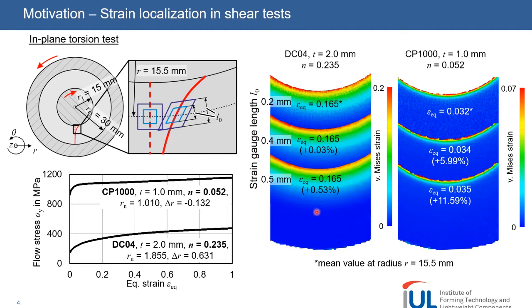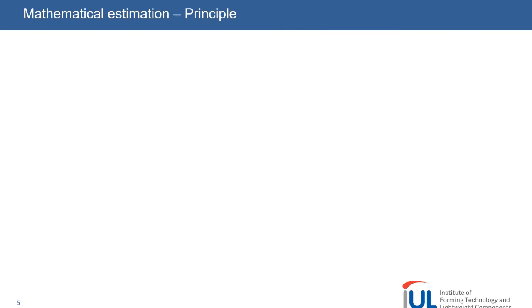DC04 shows moderate differences of 0.5%. By the way, in the in-plane torsion test we measured too high strains with increased strain gauge length, while we measure too small strains in the shear test shown before. So we see the problem: different specimens, different materials, and different strain gauge lengths will lead to different errors due to the discretization of the local strains. An analytical estimation of the expected discretization error would be very helpful for the understanding of these influences.